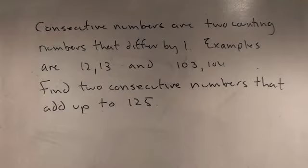Give me a couple other examples of two consecutive numbers. Well, 100 and 101. 100 and 101, that's good. How about one more? 999 and 1,000. 999 and 1,000, very good. Those are consecutive numbers.